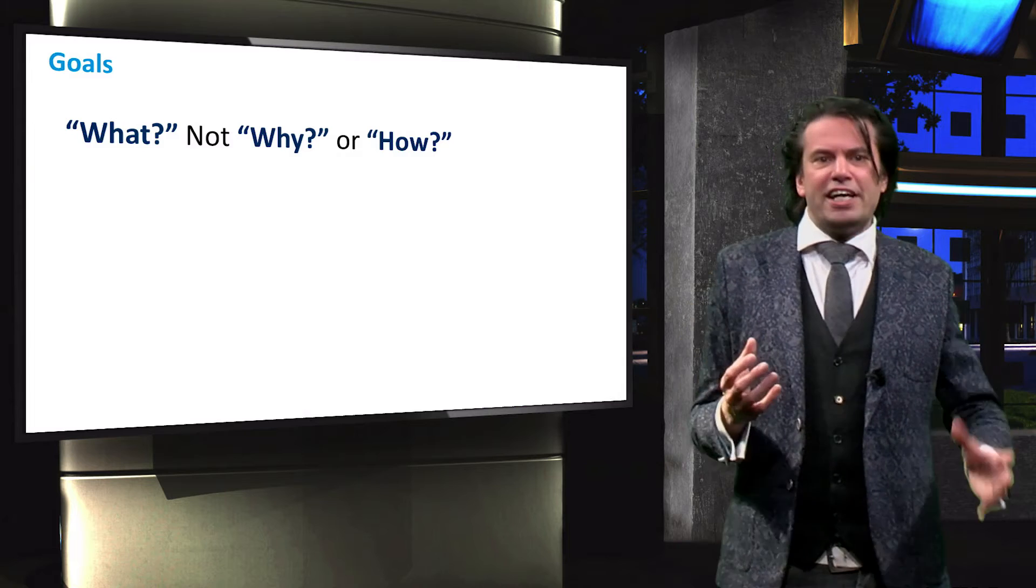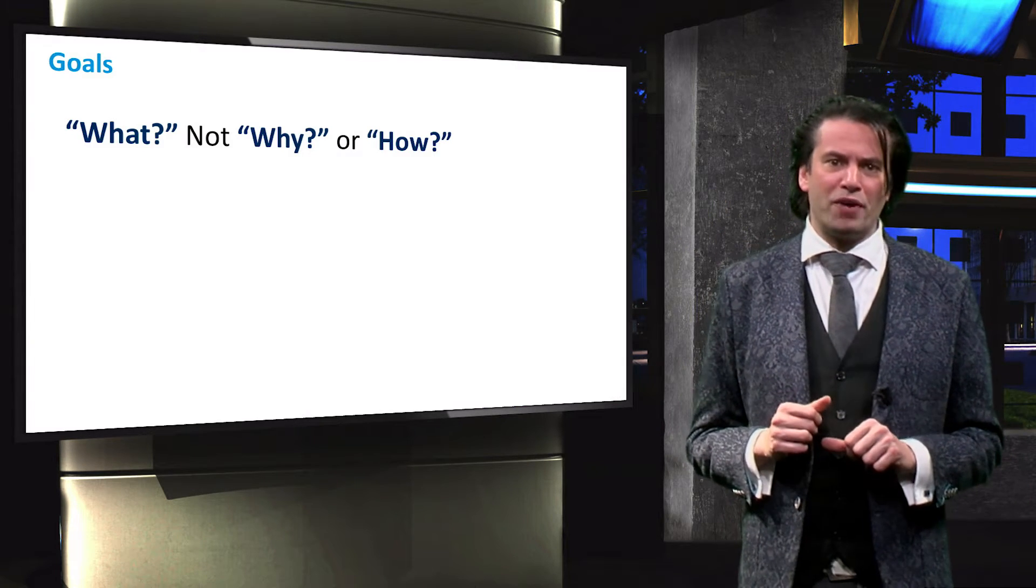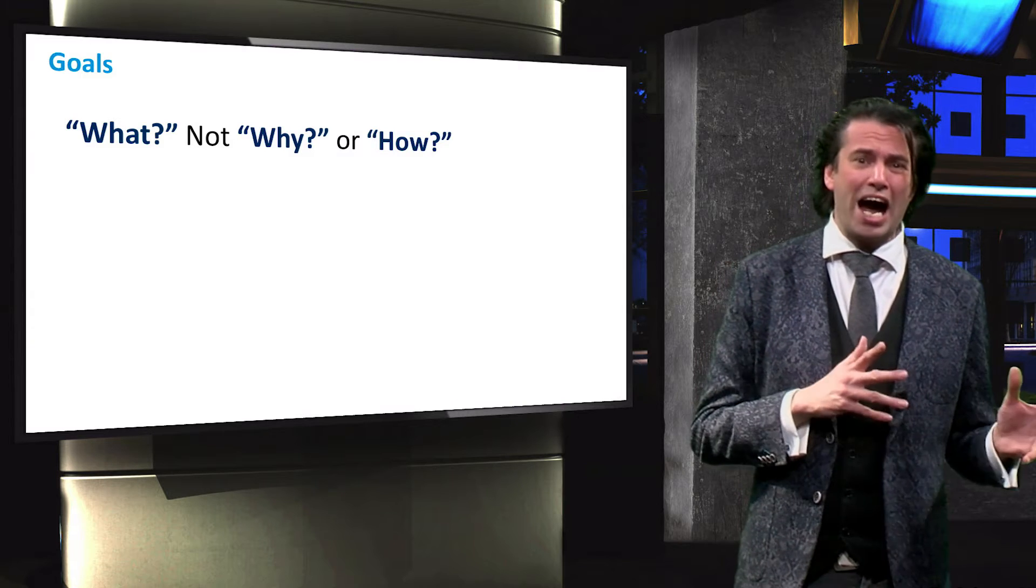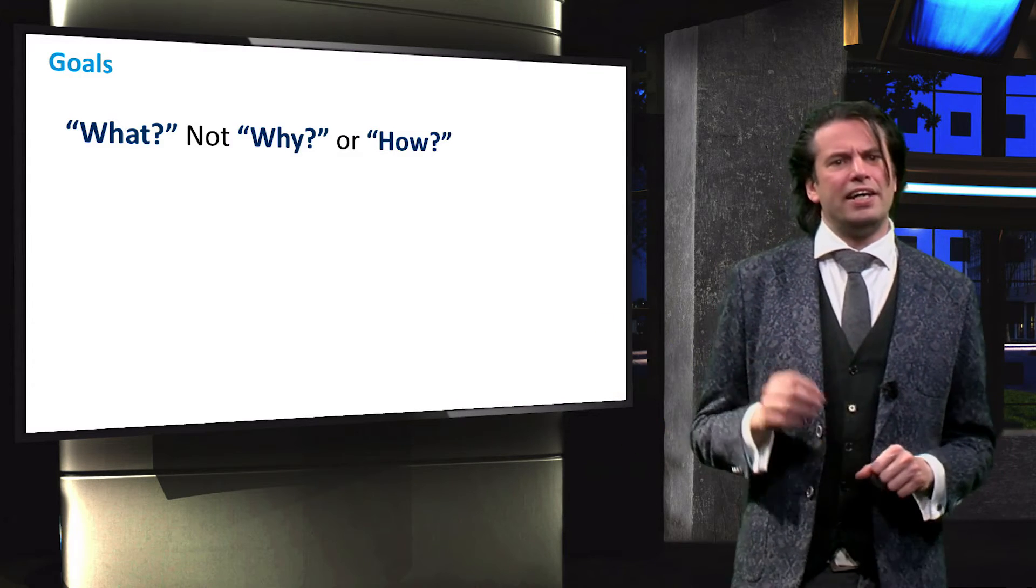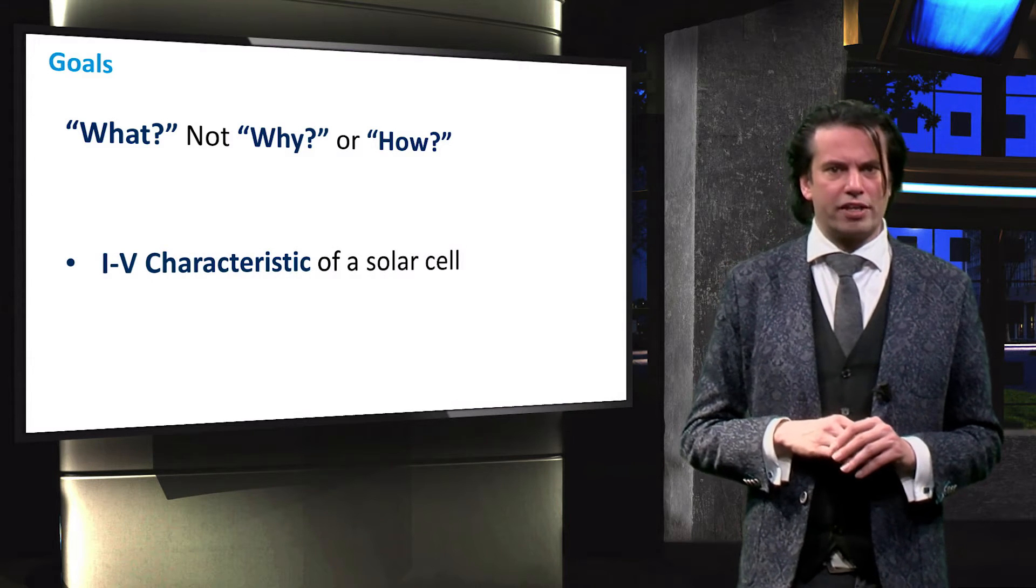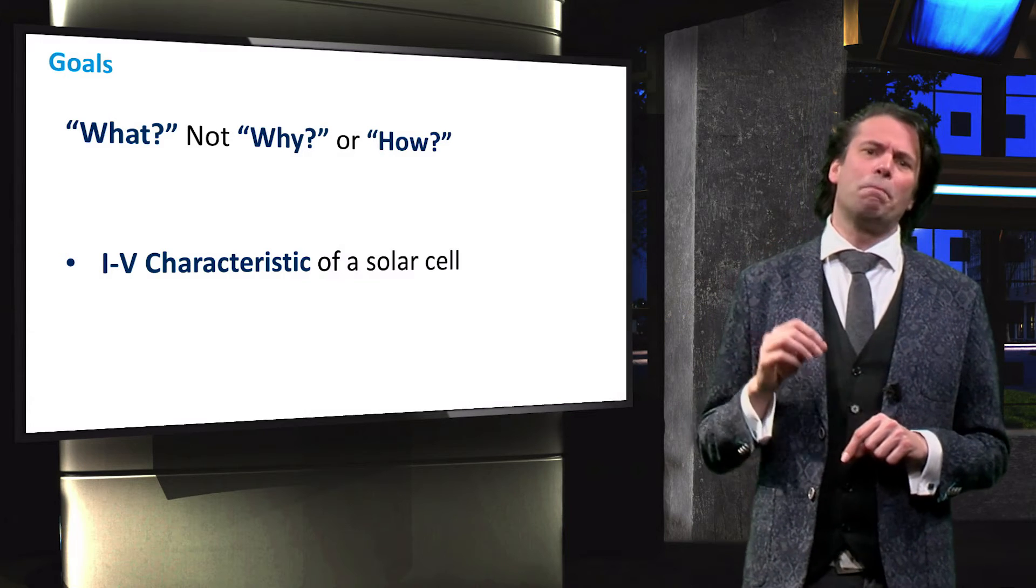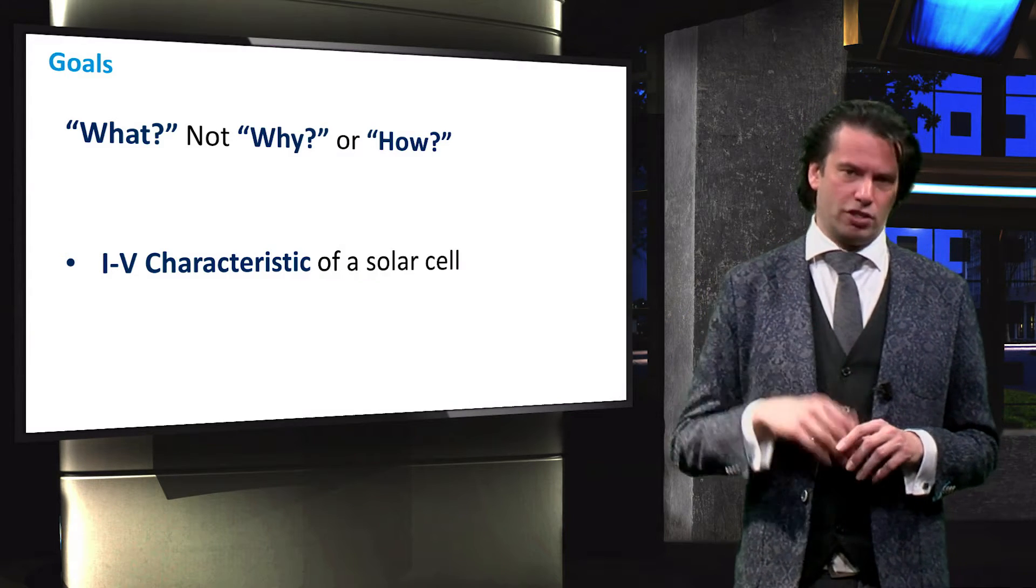This video objective is to answer what. You will need to go through the rest of the course to understand why and how. In this video I will quickly explain to you what the current voltage characteristic of a solar cell is. We will try to understand some basic parameters of a solar cell.